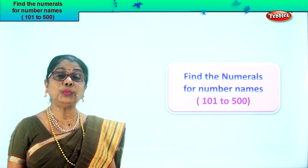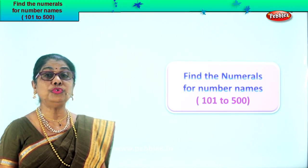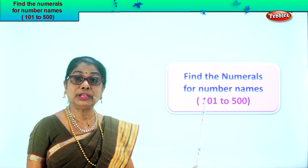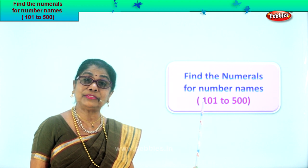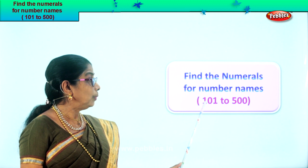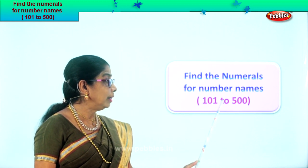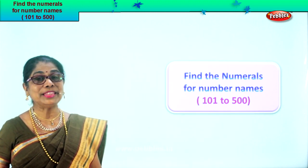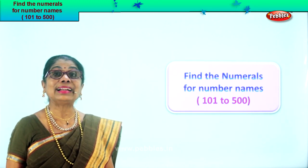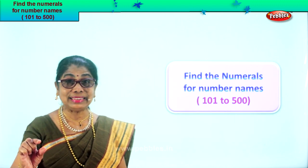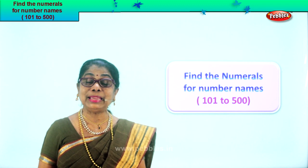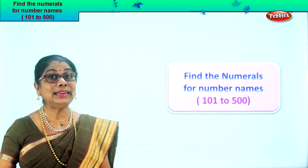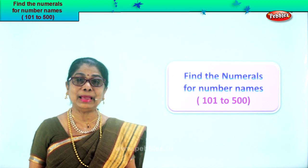Hi children, today we are going to learn to write the numerals. You must find the numeral for the number names. You already learned to write the names of the numbers, so you have number names and numerals from 101 to 500. Now you are going to write the numeral — read the number name and fill in correctly with the correct numeral. It's a very interesting exercise. Let us do an exercise trying to remember the numerals for each of the number names.